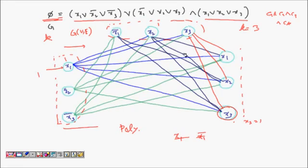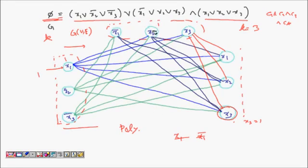Reverse direction: assume G has a clique of size k. A clique of size k must contain exactly one vertex from each triple, since no edges exist within a triple. Assign value 1 to each literal corresponding to those k vertices. Since no two literals in the clique are negations of each other (negations are never connected), this assignment is consistent. Each clause has one of its literals set to 1, so φ = 1. This is a satisfying assignment, completing the proof that Clique is NP-complete.